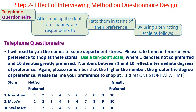For example, assume one store may score 4, another may score 7, and Walmart may score 5.